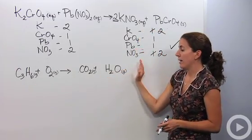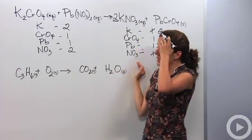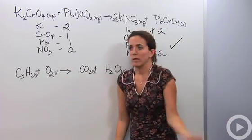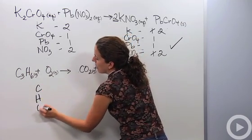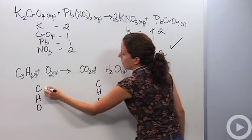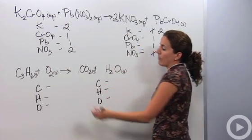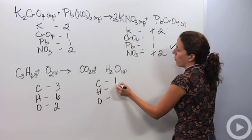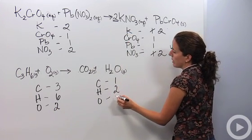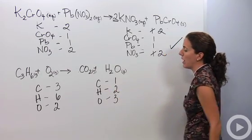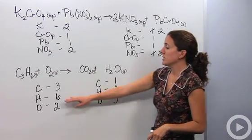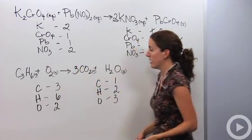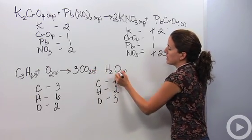Let's look at something a bit more complicated: C₃H₆ reacts with oxygen gas to produce CO₂ plus H₂O. We'll write out our elements — C, H, and O on both sides. We have three carbons, six hydrogens, and two oxygens on the reactant side; one carbon, two oxygens, and two hydrogens on the product side. First, balance carbons: three on the reactant side, one on the product side, so put a three in front of CO₂. That changes the oxygen count to six plus one, which is seven.